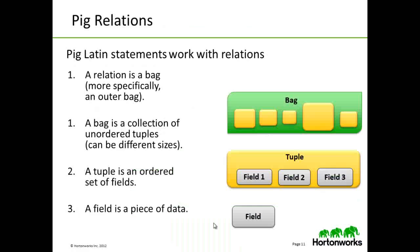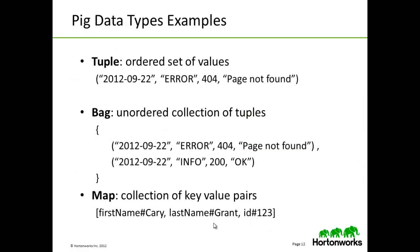A PIG relation is a bag of tuples, similar to a table in a relational database, where the tuples in the bag correspond to the rows in a table. Unlike a relational table, however, PIG relations don't require that every tuple contain the same number of fields, or that the fields in the same position or column have the same type. PIG has three complex data types: Maps, Tuples, and Bags — all of which can contain data of any type, including other complex types.